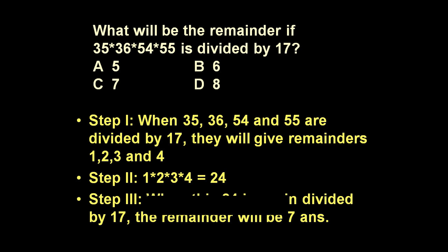Now in step 3, again you divide this 24 by 17. When this 24 is again divided by 17, the remainder will be 7. And this 7 is the answer.